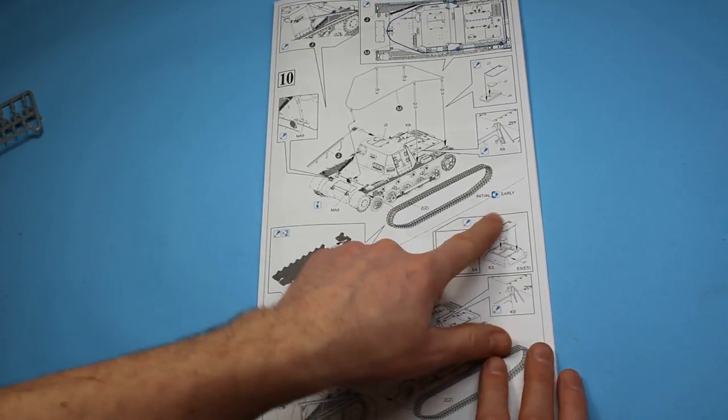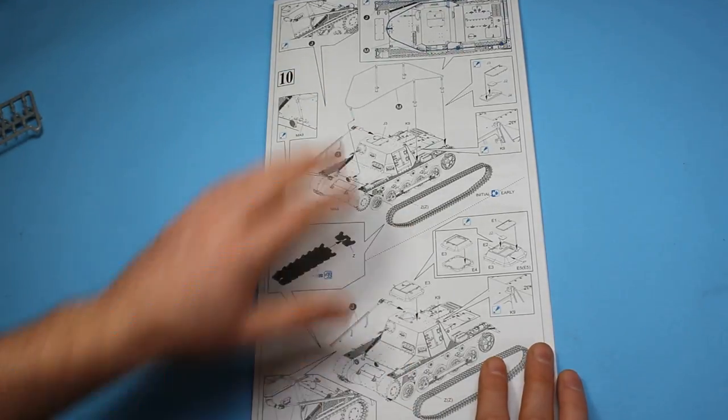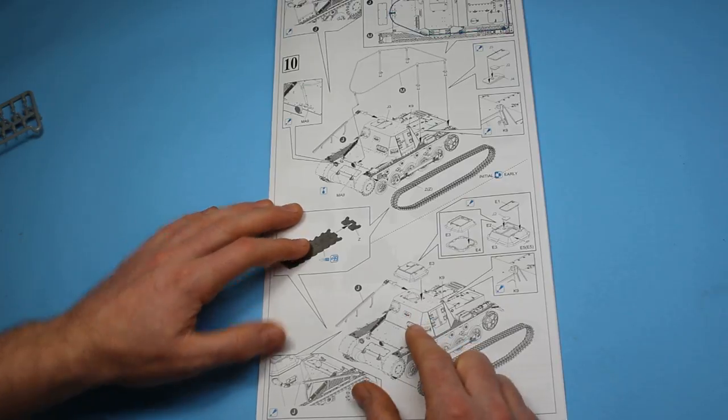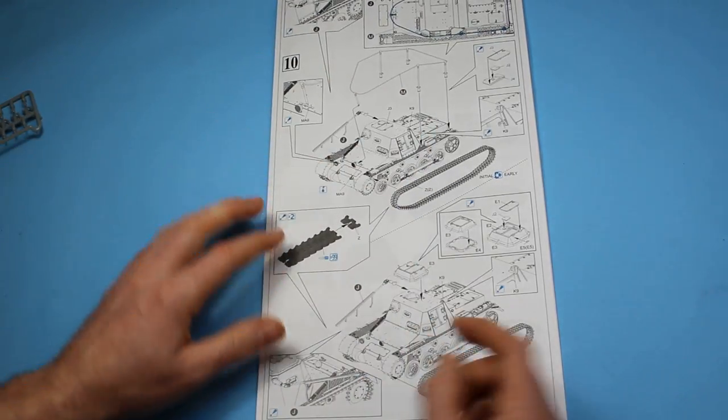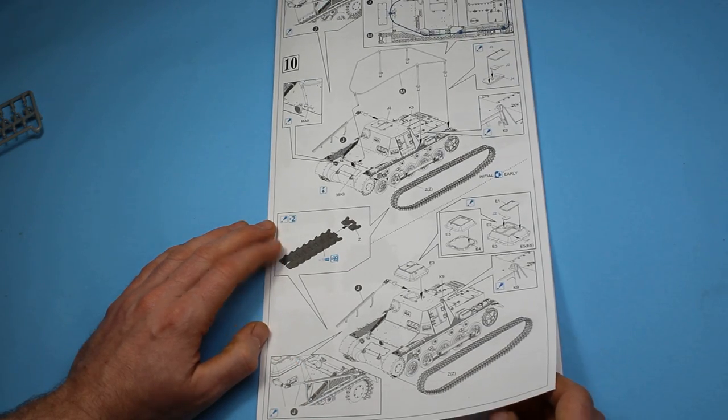Here this line denotes whether you're doing an initial or an early. If you're going to move on from the initial then a cupola goes on the top here as well. You've got the option whether you put the antenna mast on or not depending on what marking option you pick.